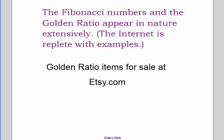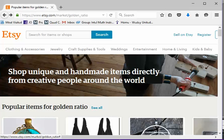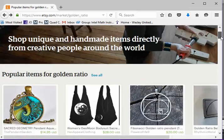The Fibonacci numbers and the golden ratio appear in nature and architecture extensively, and I'll let you look those up on the internet. It is kind of fun to do a search on Etsy for golden ratio and see some of the products. So here are some of the popular items for the golden ratio.